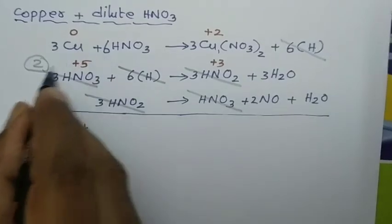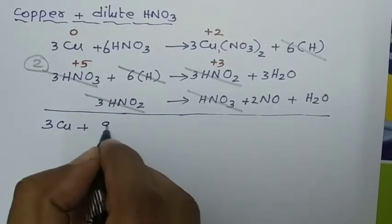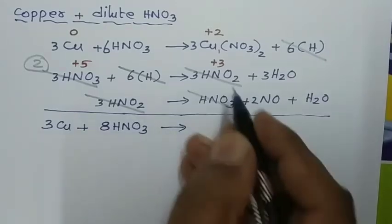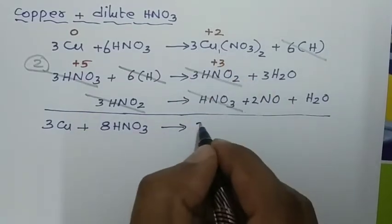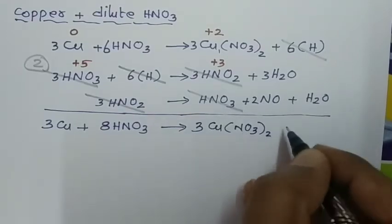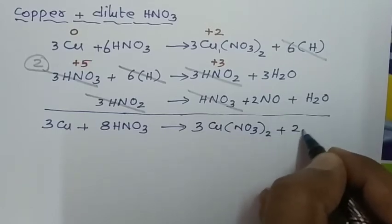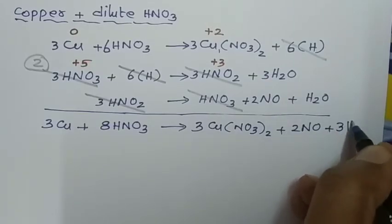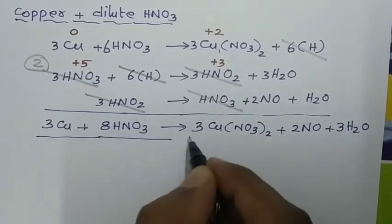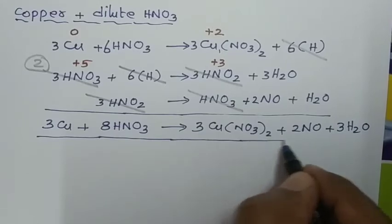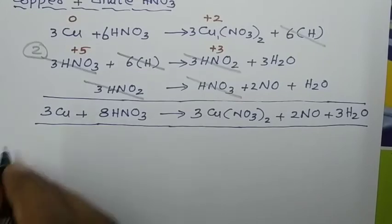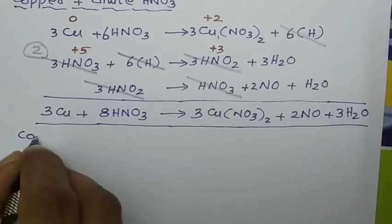After all cancellations, we add everything together: 3 Cu plus (6 + 2 =) 8 HNO₃ gives 3 Cu(NO₃)₂ plus 2 molecules of NO plus 3 molecules of H₂O. So remember: when copper undergoes reaction with dilute nitric acid, nitric oxide (NO) gas is liberated.